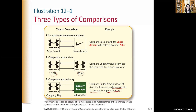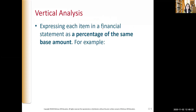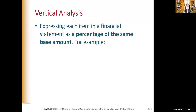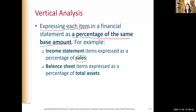How do we calculate industry ratios? Industry averages can be obtained from websites such as Yahoo Finance or from financial rating agencies such as Dun & Bradstreet, Moody's, and Standard & Poor's. So, what is vertical analysis? Vertical analysis means we want to analyze the company by expressing each line item in the financial statements as a percentage of the same base amount. For example, in the income statement, we compare each line item as a percentage of sales. For the balance sheet, we express each line item as a percentage of total assets.